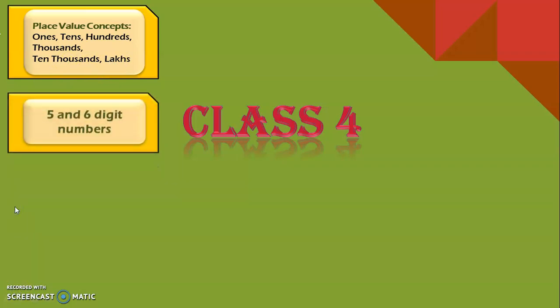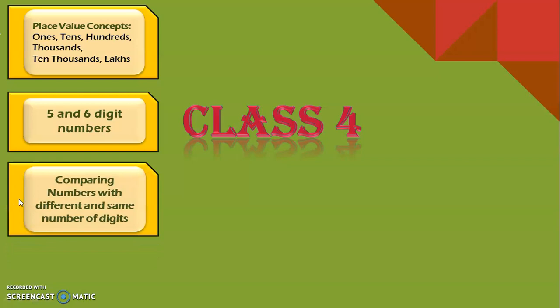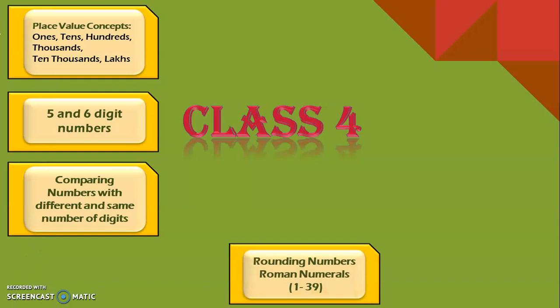The next topic we will be dealing with is some activities with respect to five and six digit numbers. After that, we will be comparing numbers with different and same number of digits, which means we will be seeing comparison of two, three, and four digit numbers with a five digit or six digit number, and comparison of five and six digit numbers among themselves. The next topic we will be seeing is about rounding numbers and Roman numerals from 1 to 39.